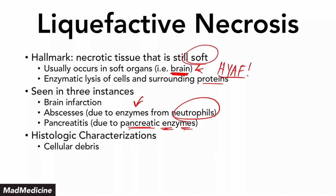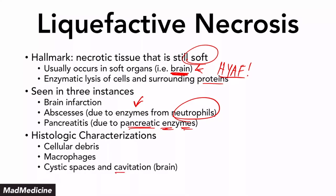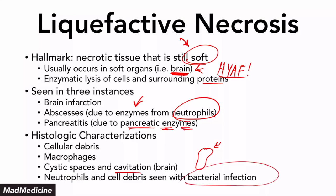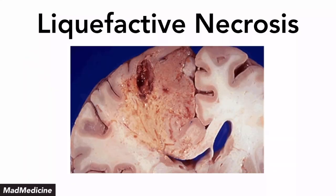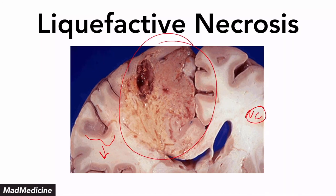When it comes to histology, essentially there is general cell debris happening. There are going to be macrophages as well as some cystic spaces or cavitations — you might see fluid-filled spaces because the tissue is soft and the surrounding proteins of the architecture are being broken down. You're also going to see neutrophil and cell debris, especially with bacterial infections. This is a gross image of liquefactive necrosis in the brain — this part of the tissue is perfectly normal, but this gigantic area has little tiny cystic spaces and a giant cavitary lesion as well.